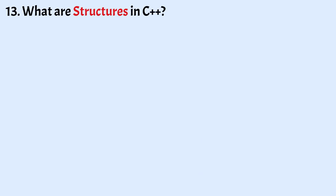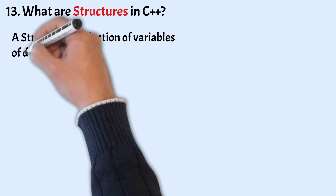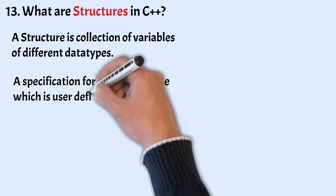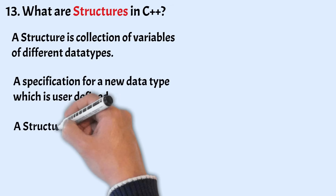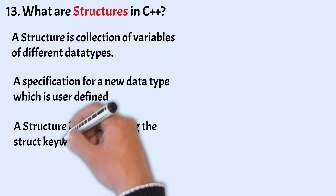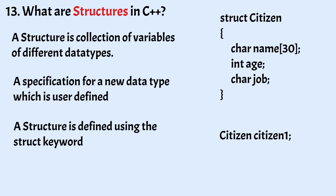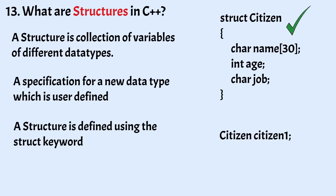Now let us understand what are structures in C++. A structure is a collection of variables of different data types. A structure is a specification for a new data type which is user-defined, and is defined using the struct keyword. In this example, the structure definition serves only as the blueprint for the creation of variables of type citizen and does not actually create the variables — it does not reserve space for them in the memory. In order to actually create the variable, you will have to create a variable citizen1 of type citizen in the main function.